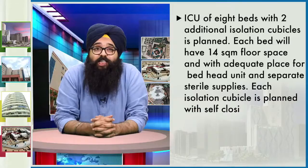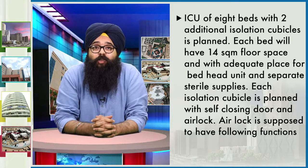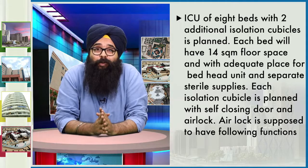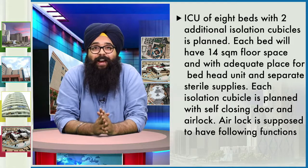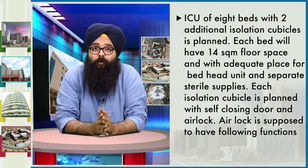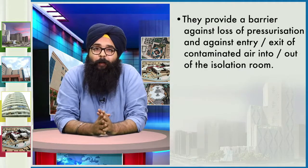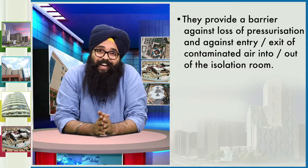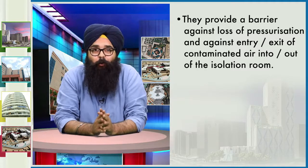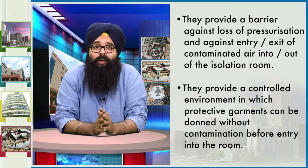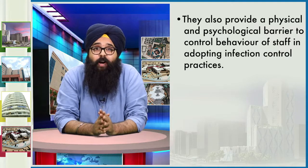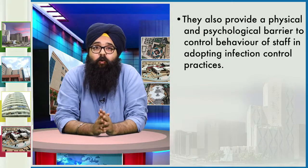As an example, an ICU of eight beds with two additional isolation cubicles is planned. Each bed has 14 square meters of floor space with adequate place for a bed head unit and separate sterile supplies. Each isolation cubicle has a self-closing door and airlock. The functions of an airlock are: to provide a barrier against loss of pressurization and against entry/exit of contaminated air; to provide a controlled environment where protective garments can be donned without contamination; and to provide a physical and psychological barrier controlling staff adoption of infection control practices.